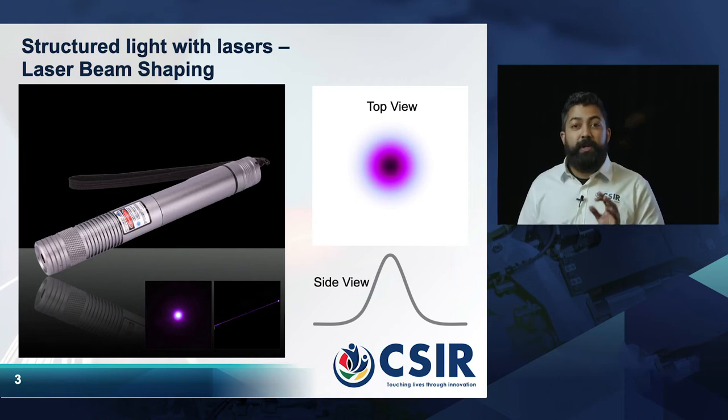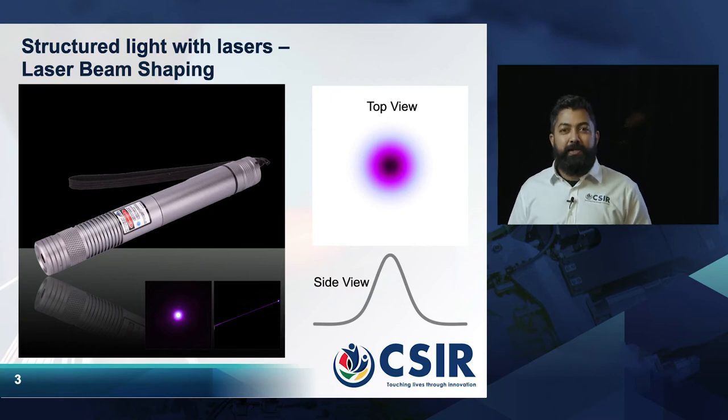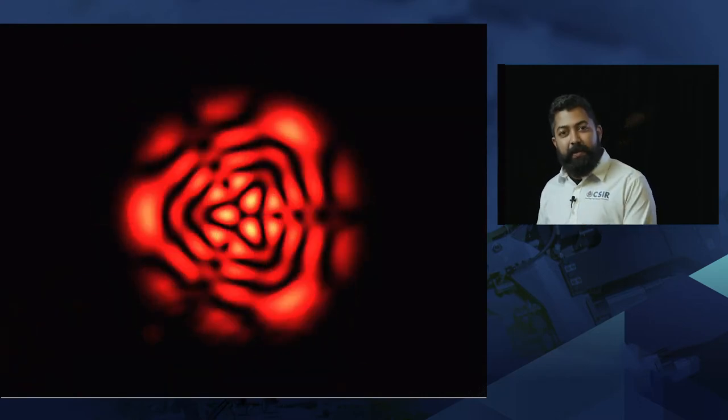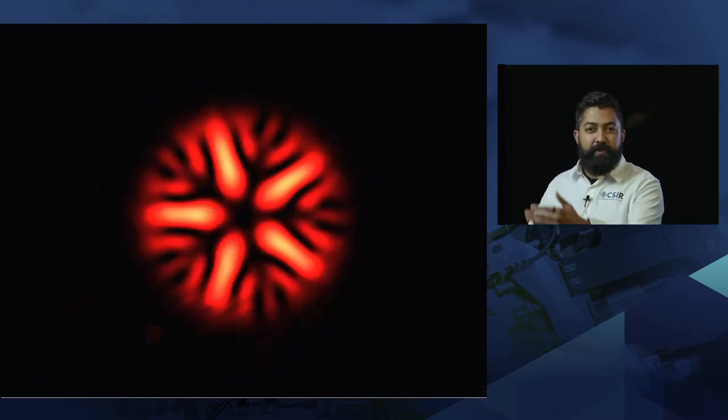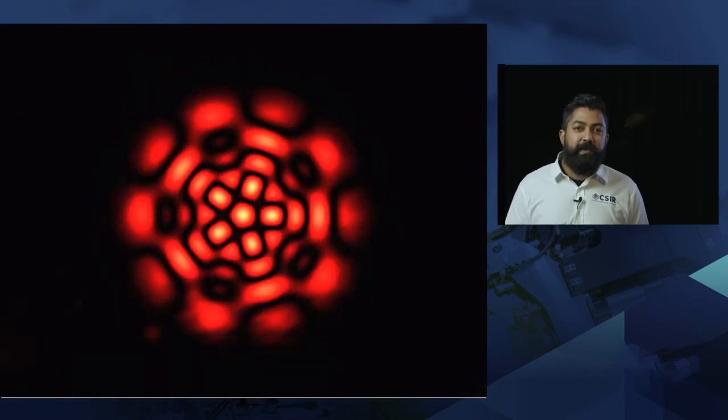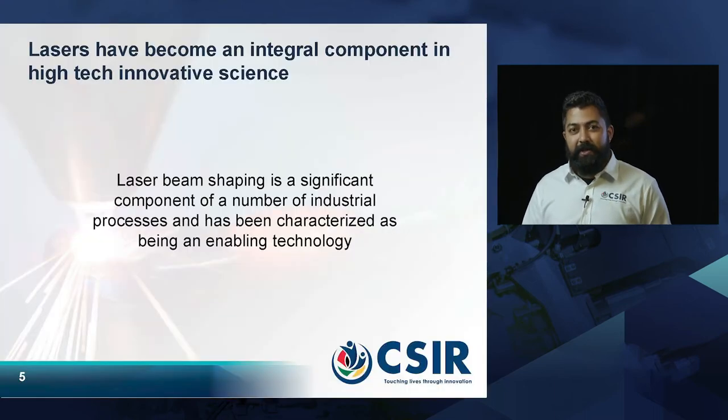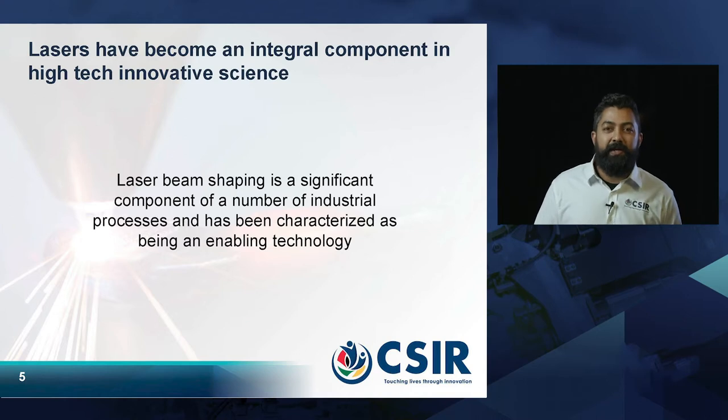Now we're actually structuring light with lasers. If I think about a laser pointer like the one on the screen, we can see that if I were to shine this onto a wall, I would have this beautiful picture. The center of the beam is very intense while the rest of the beam slowly decreases in intensity as I move away from the center. This beam is called a Gaussian beam and this is typically the beam that we would get out of any commercial laser system. However, this is not always the best beam for the application at hand.